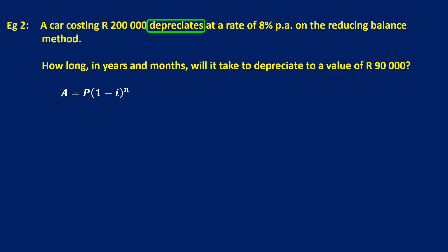Now, we know that initially the car costs 200,000 rand. So your P-value will be 200,000 and it's going to be worth 90,000 rand at the end. So we need to get closer to that value of n. So the first thing I'm going to do is take 90,000 and divide it by 200,000. And I get left with 9 over 20.